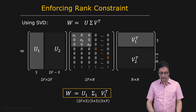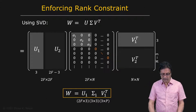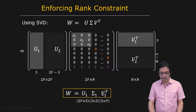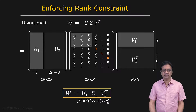In our case, this economical representation means W is exactly equal — not an approximation, but exactly equal due to the rank constraint — to U1, the sub-matrix, times sigma1, which is the 3 by 3 matrix, times V1 transpose. So this gives us a 2F by 3 matrix times a 3 by 3 matrix times a 3 by N matrix.